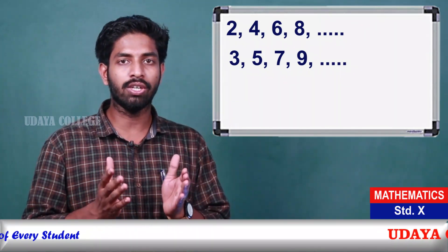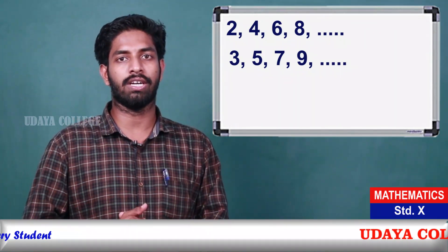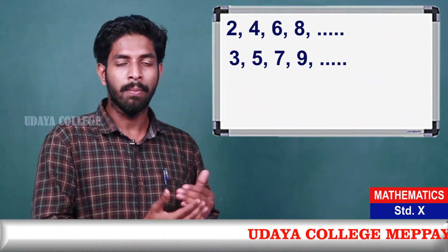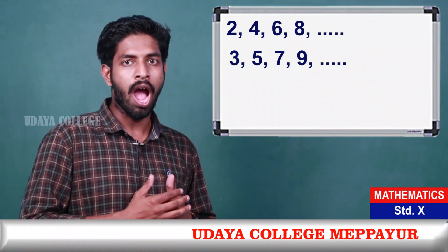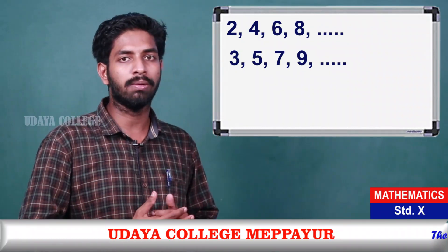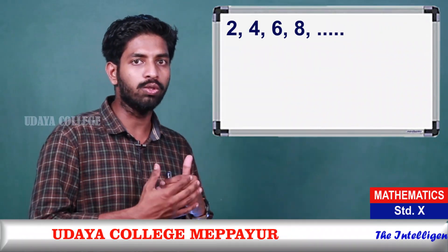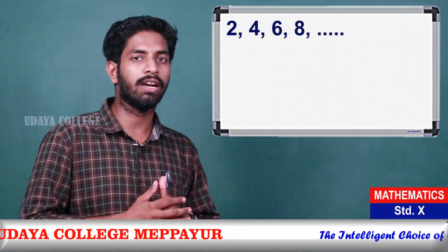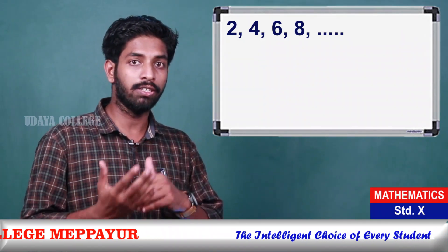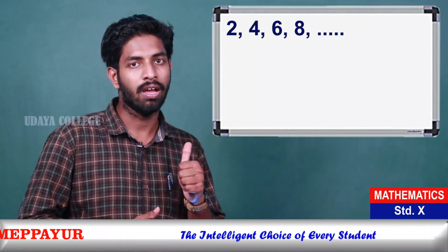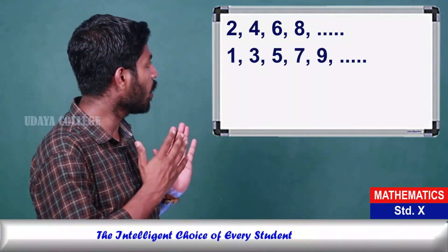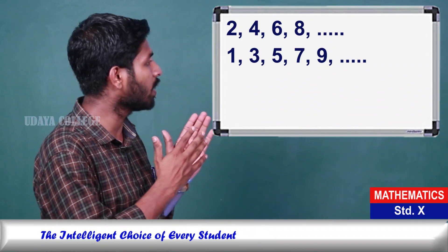Here we call it natural numbers. When we divide by 2, the remainder is 1. So we call it a pattern: 1, 3, 5, 7, 9.